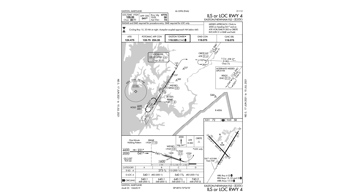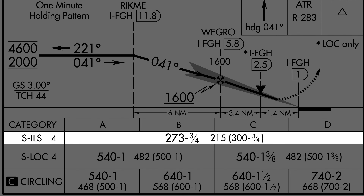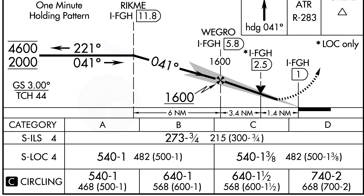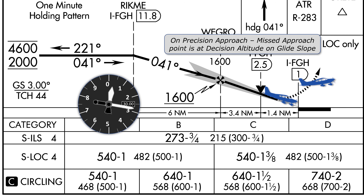Let's start with a simple case. Here's the ILS approach at runway 4 at Easton — kind of a plain vanilla ILS approach. The minimum for the ILS is 273 feet. Remember that this is a precision approach, so this is a decision altitude. When you're on the approach, you're descending with vertical guidance by following the glide slope. So when you reach 273 feet — the decision altitude — you have to decide if you can continue the approach or go missed. And if you go missed, you'll execute the missed approach at that point. So simply put, the missed approach on an ILS, or any precision approach, is the point you're at when you're on the glide slope at the decision altitude.